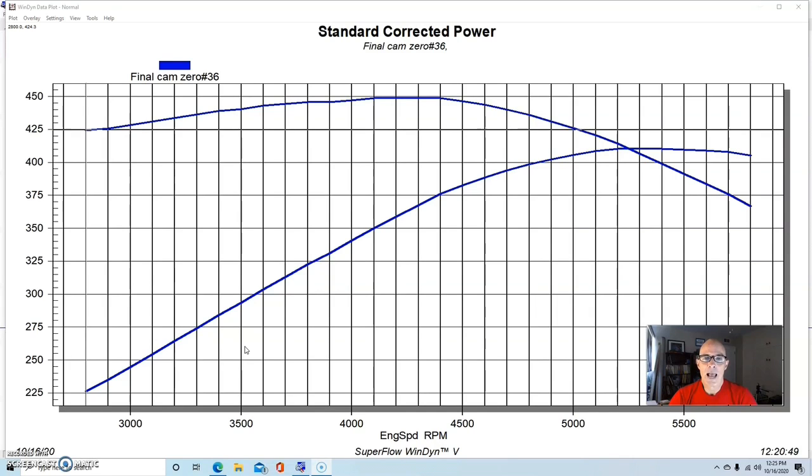When we advance the cam, it doesn't do this, or retard the cam. In this case I didn't get to retard the cam, but people think that advancing the cam adds power down low, retarding the cam adds power up top, and if you keep it in the middle you keep it in the middle. But the reality is that sometimes it works and sometimes it doesn't, and this test illustrates that perfectly.